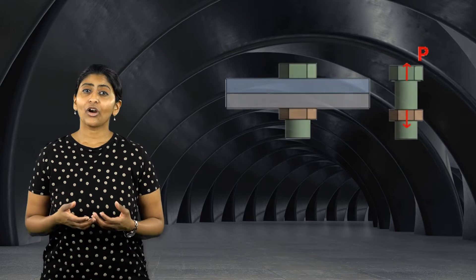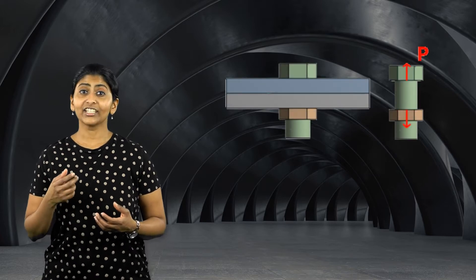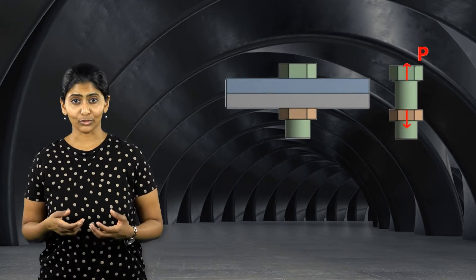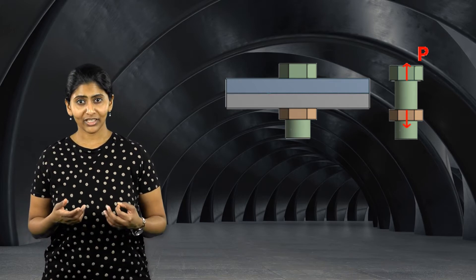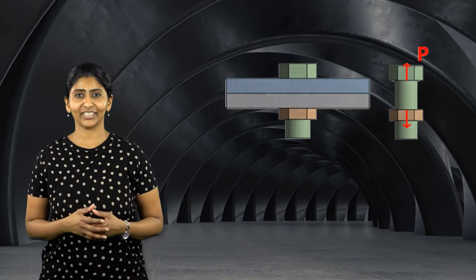Failure to model contact may result in various parts penetrating each other. Hence, in case of bolted joints, contact between the bolt head, the nut, and the mating components is essential for defining bolt preload and for capturing the interaction between them.